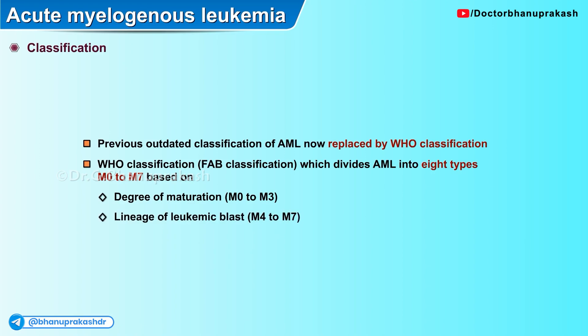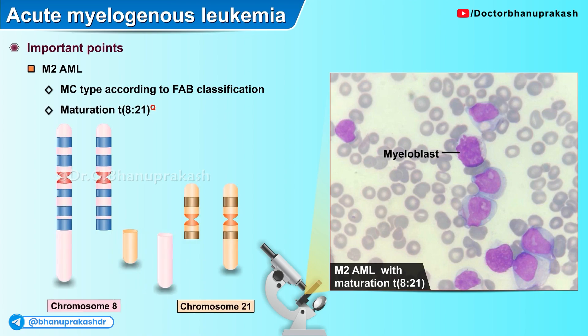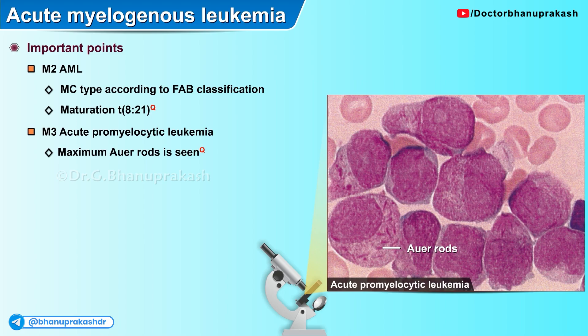Now for a quick recap of the most important points. The most common type of acute myelogenous leukemia according to the FAB classification is M2 AML with maturation, as seen with translocation t(8;21). The maximum number of Auer rods are seen with the M3 variant, named acute promyelocytic leukemia.